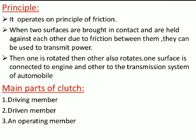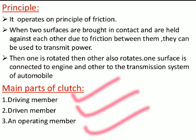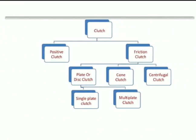Now coming to the main parts of Clutch. The parts of Clutch are: the driving member — the part to which power is given; the driven member — the part which is driven by the driving member; and the operating member — which is operated by these two members. These are the three main members of a Clutch.